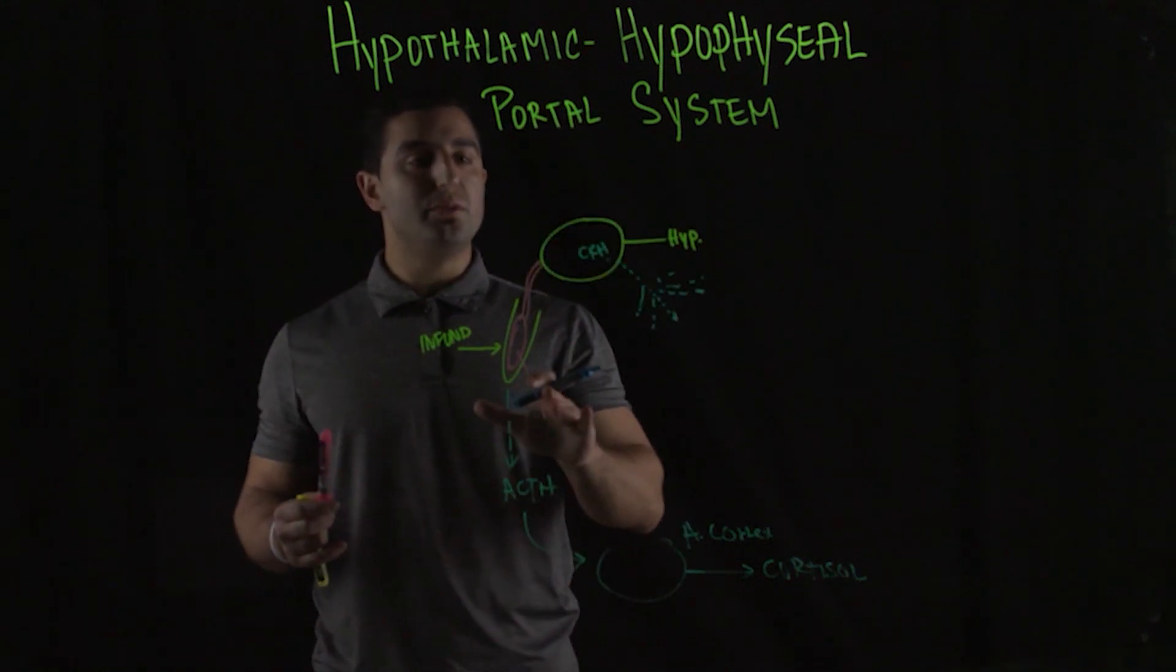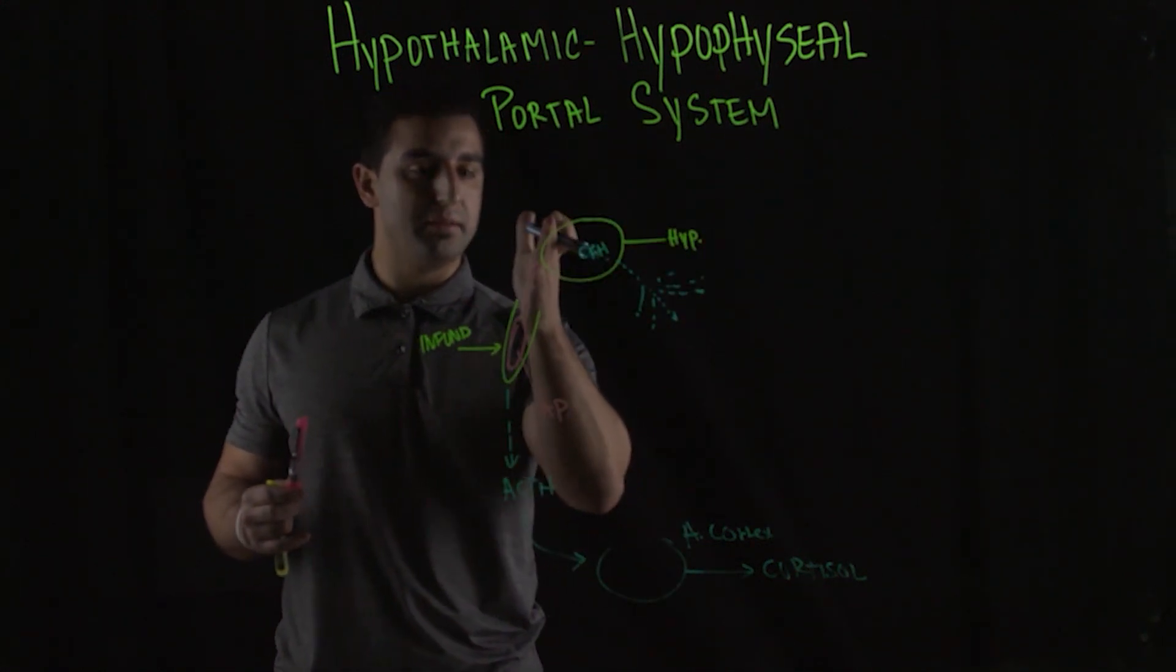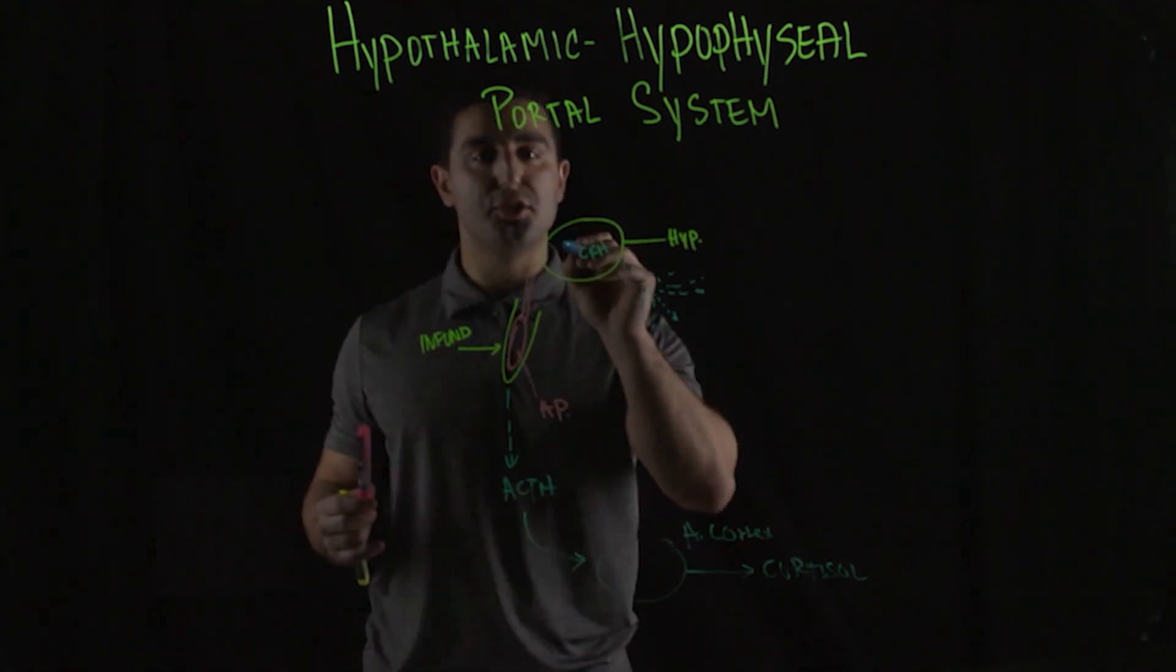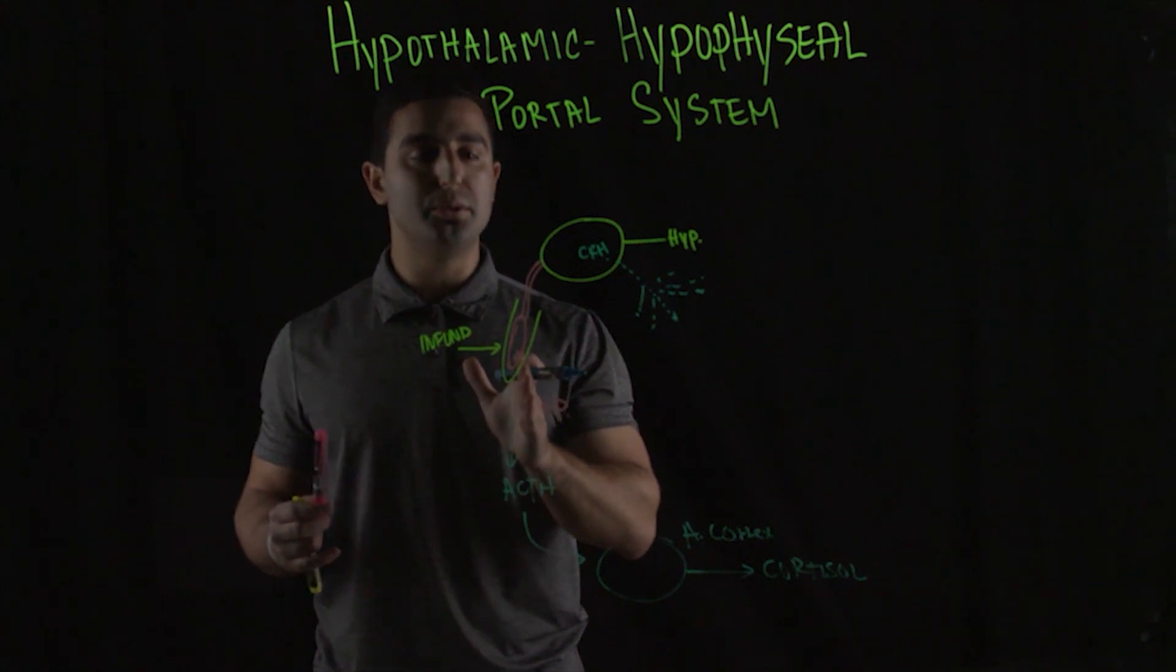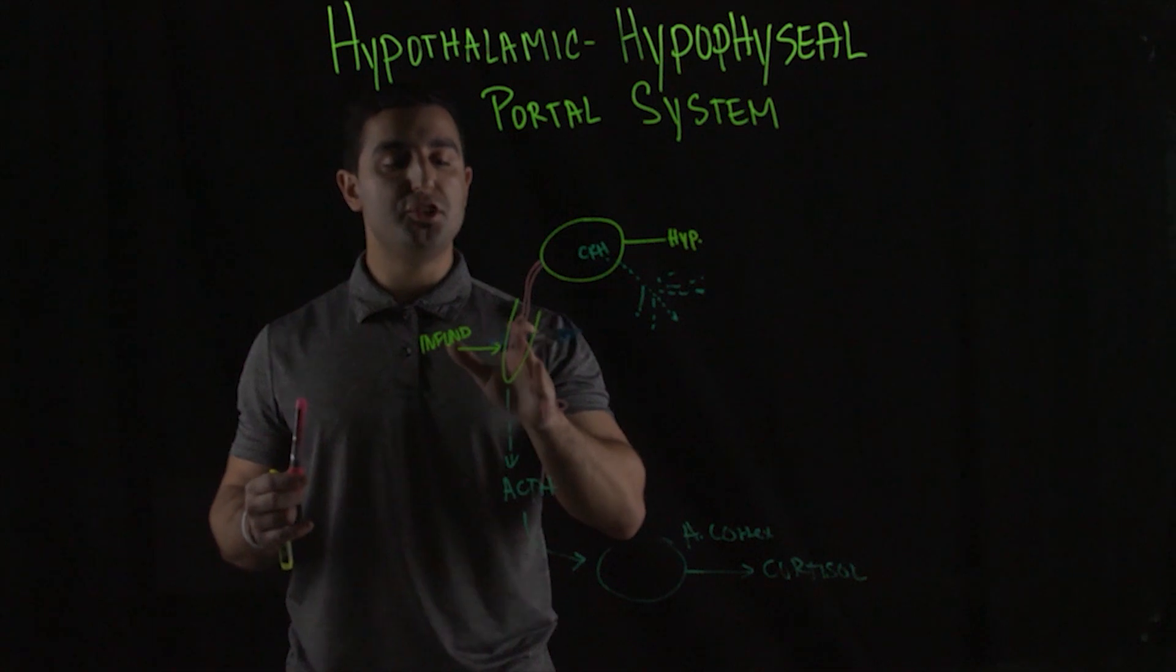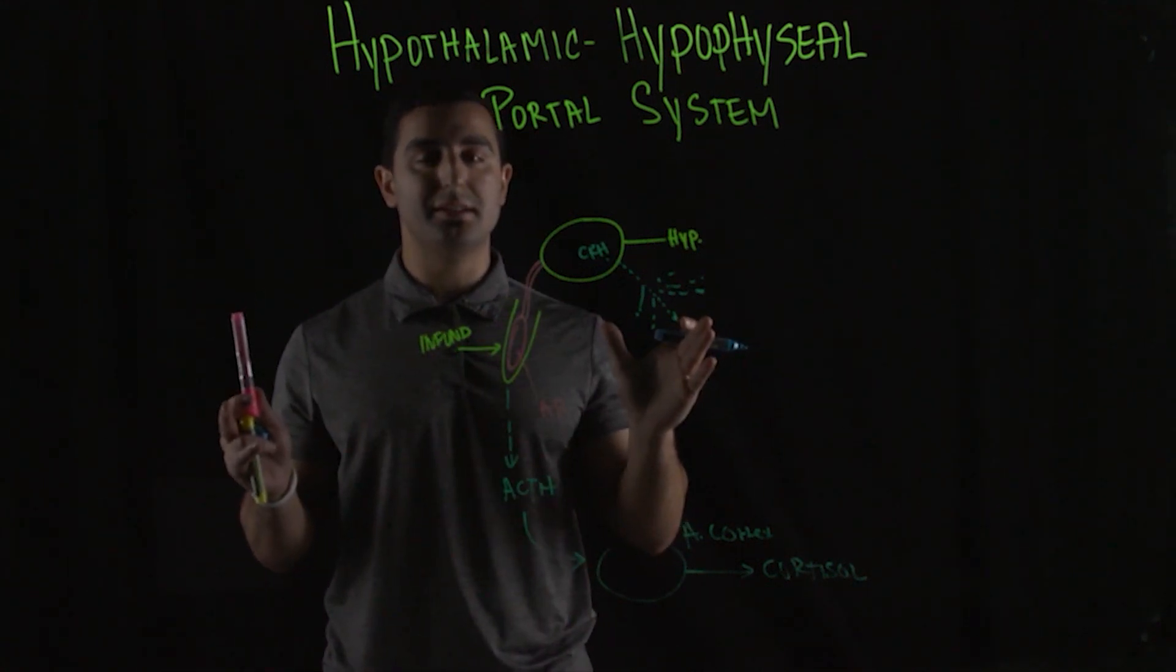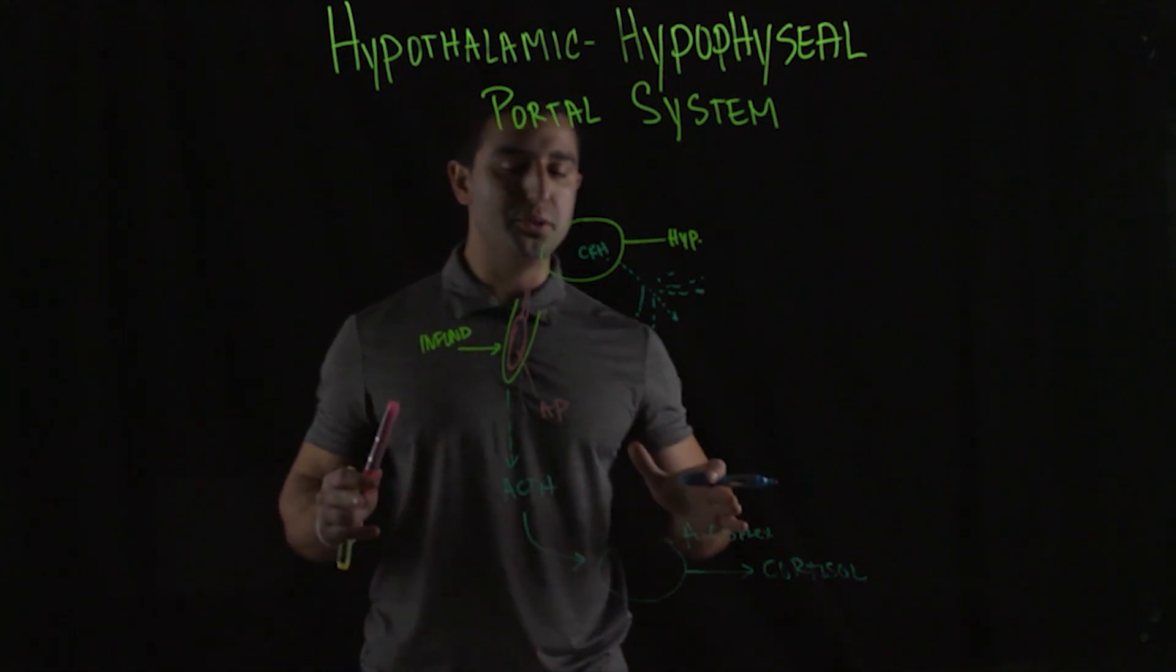So here, this is just the whole main general gist of the hypothalamic hypophyseal portal system, where this capillary allows for a direct connection of the hypothalamus to the anterior pituitary in order so whenever the hormones of the hypothalamus are secreted, this generates the highest response possible. And so now you're wondering, it still gets diluted out.